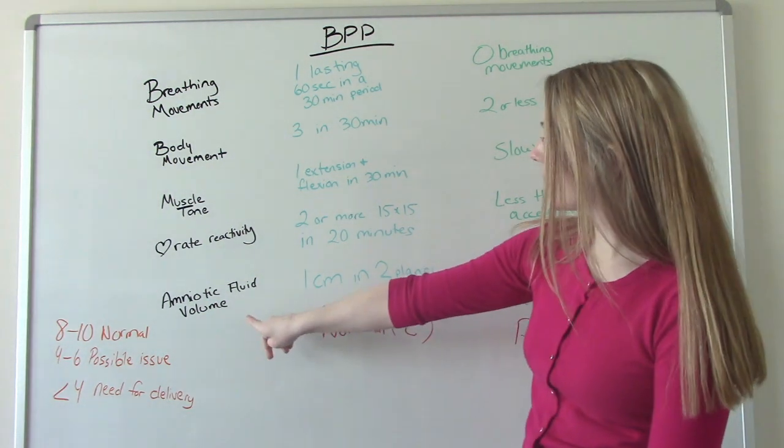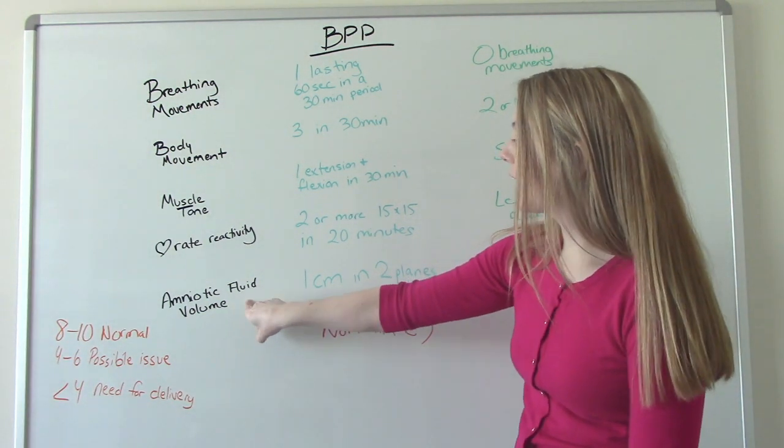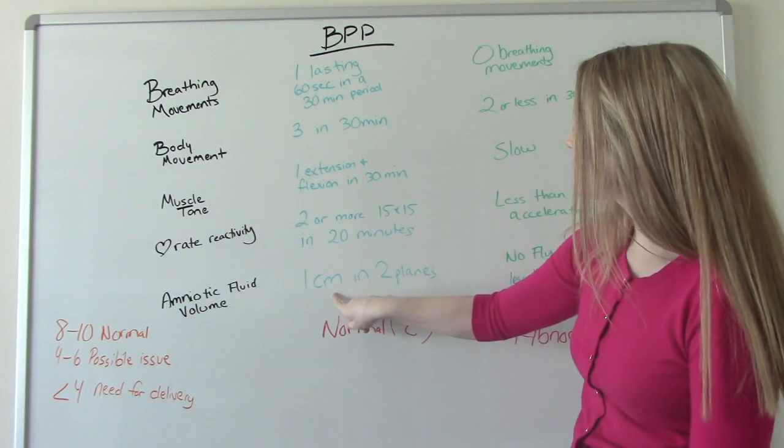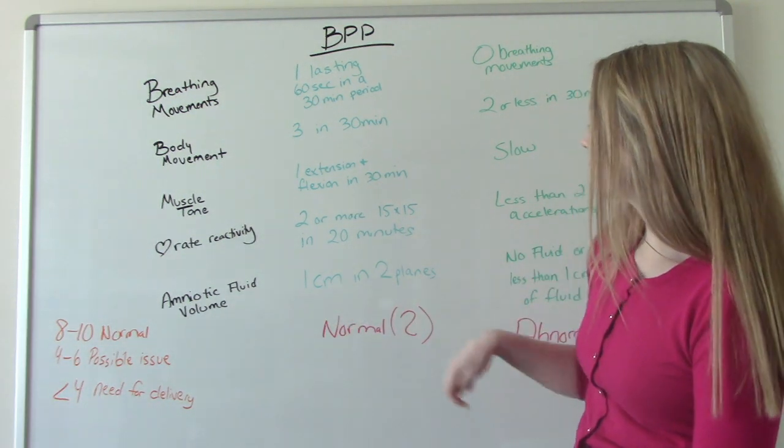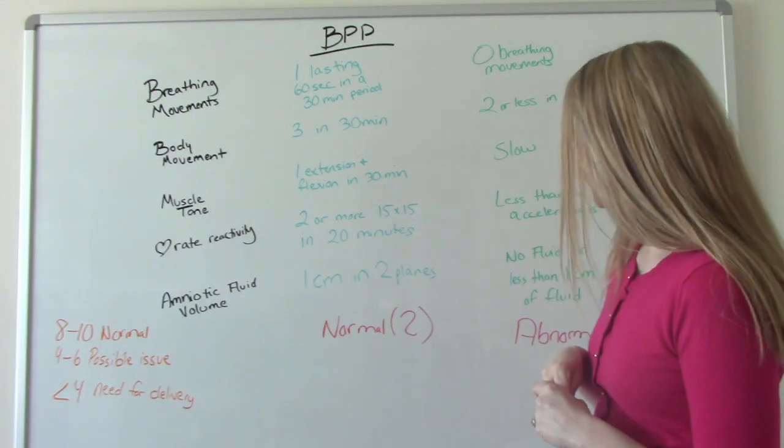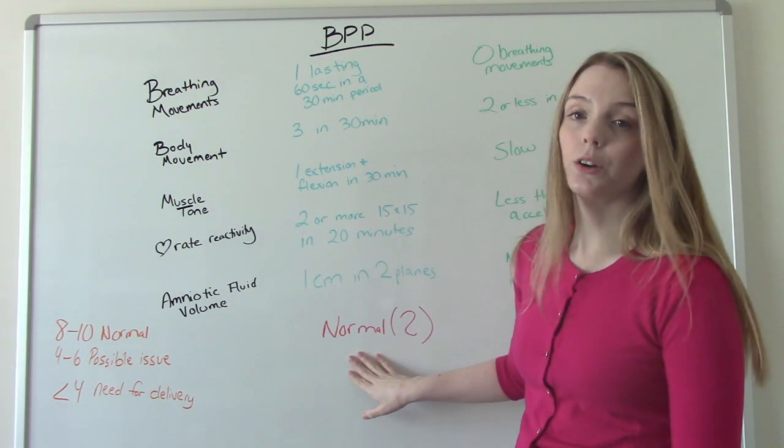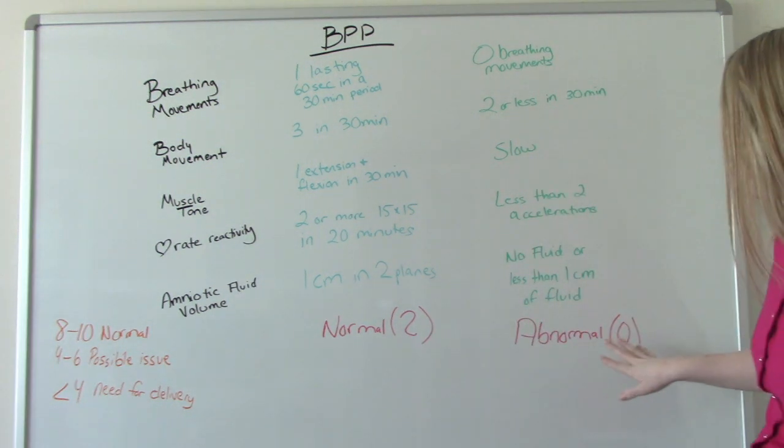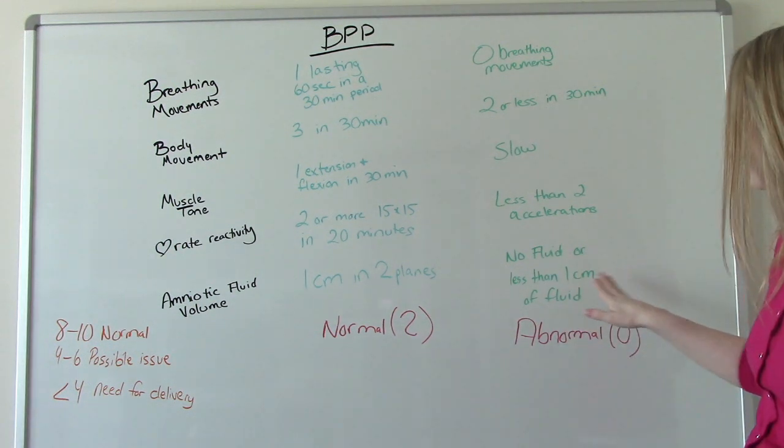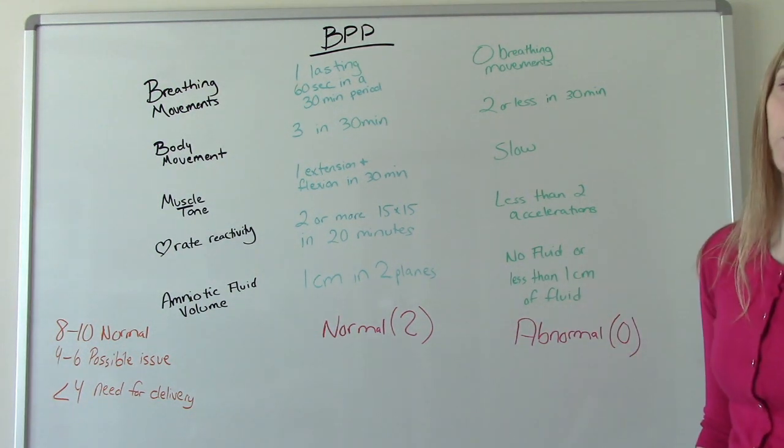And then our final category here is amniotic fluid volume. So they need to have at least one centimeter of amniotic fluid in two plates or two pockets sometimes, as they're in pockets, to get a two to be considered normal. And then to be abnormal they have no fluid at all or they have less than one centimeter of fluid.